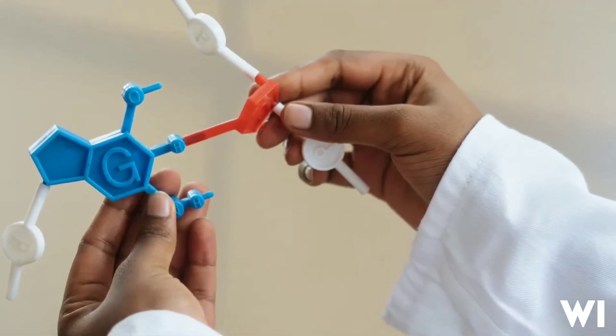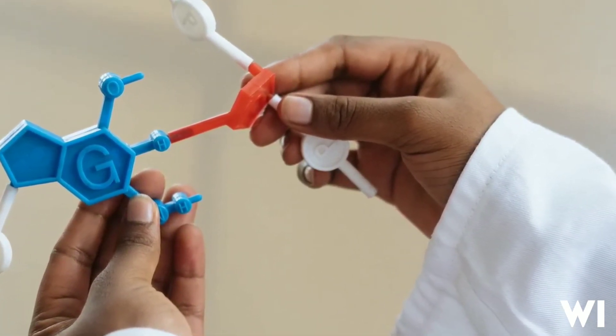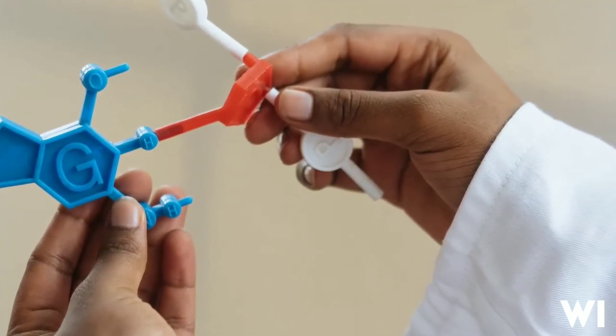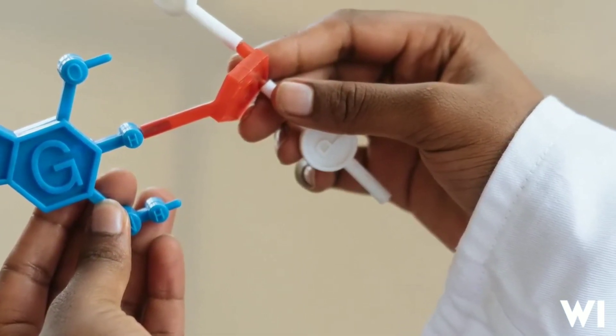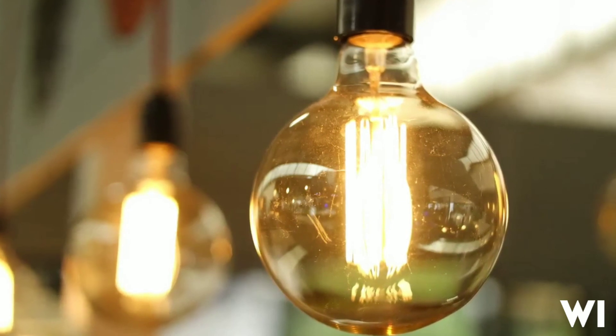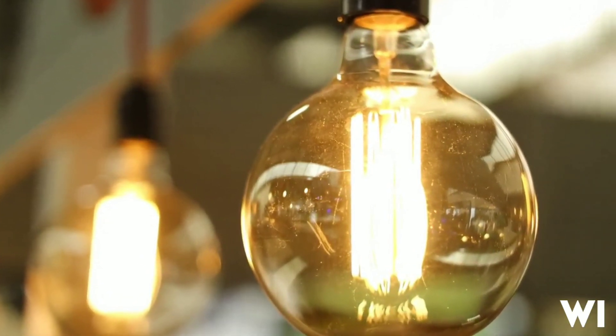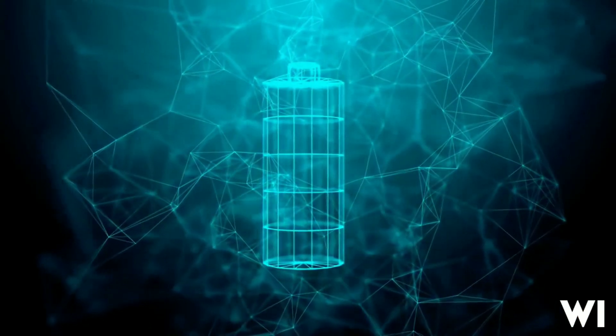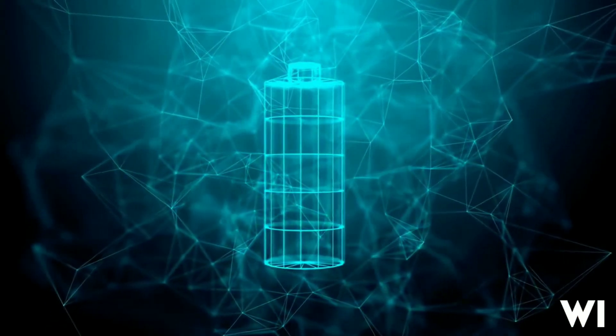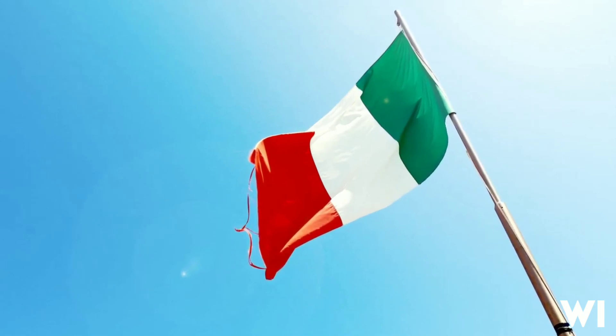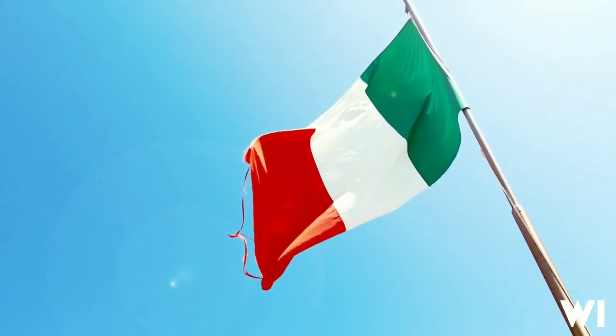However, fellow Italian scientist and friend Alessandro Volta disagreed with Galvani, believing that the contraction was caused by the joining of two metals by a moist intermediary. Volta conducted several experiments to verify his hypothesis and published the results in 1791. In 1800, Volta invented the first battery, which he called a voltaic pile.